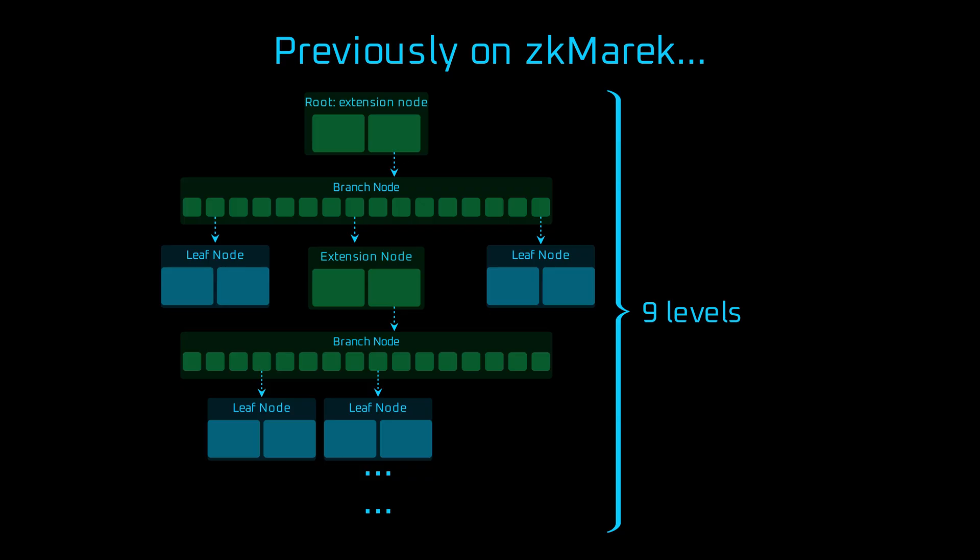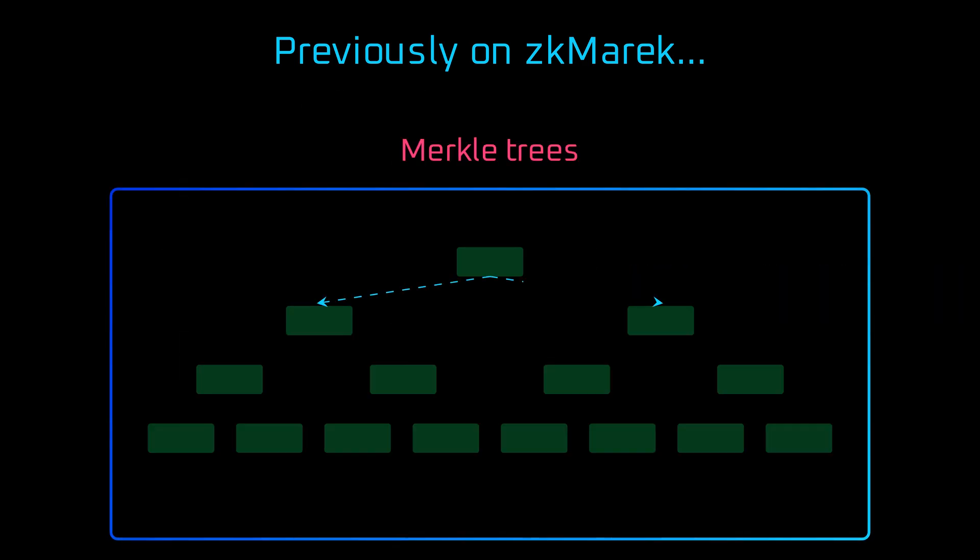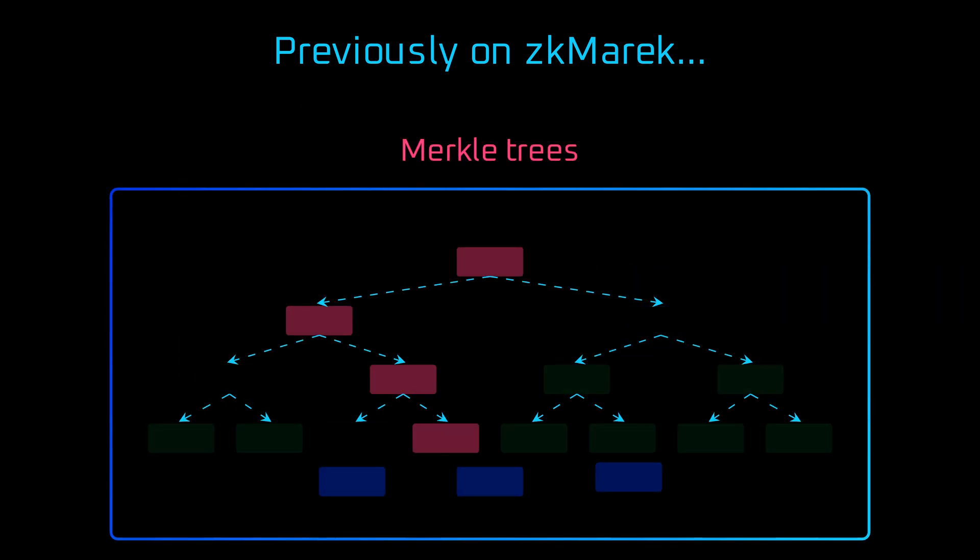To create a proof, we need to calculate up to 1632 byte hashes per level. So a single proof weighs up to almost 4 kilobytes. Proving 1,000 accounts, nearly 4 megabytes. That's a lot, especially by blockchain standards. If you want to learn more about merkle trees, check out the full episode about them.